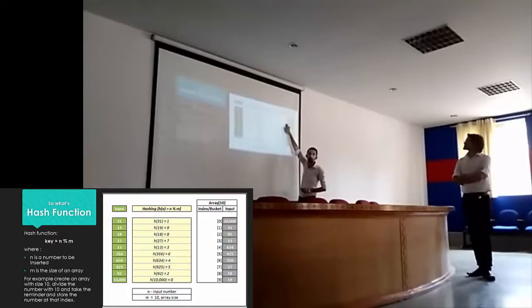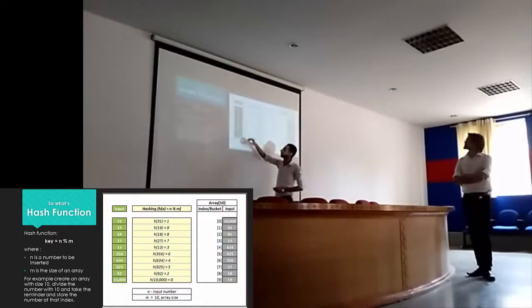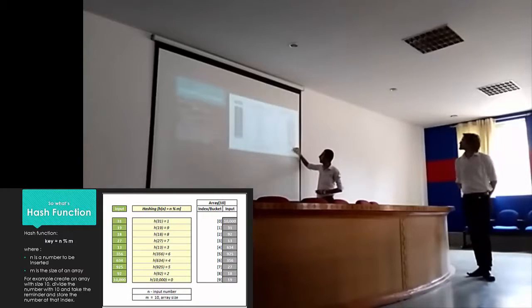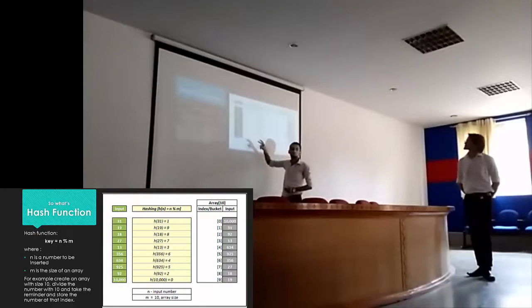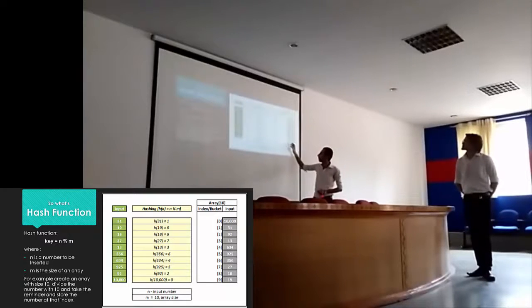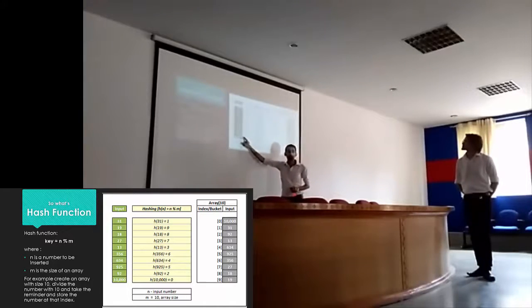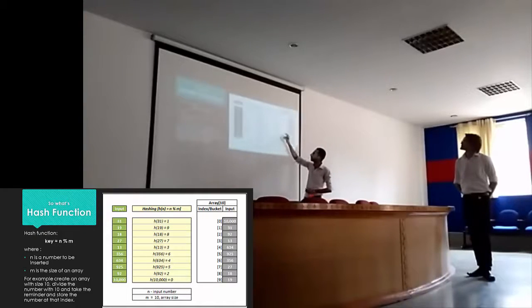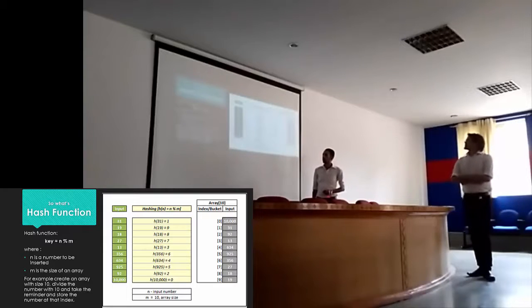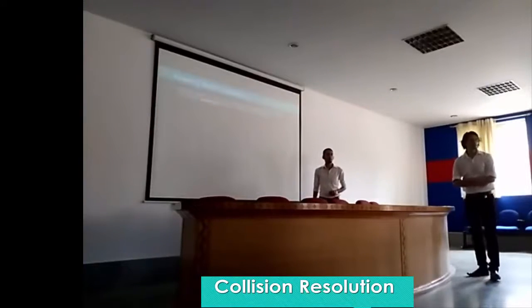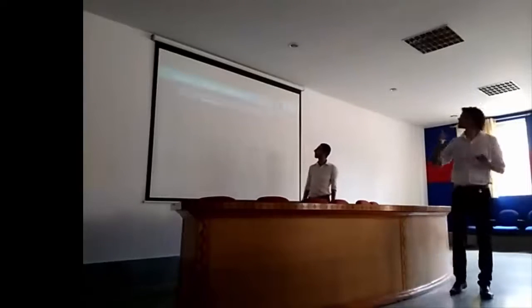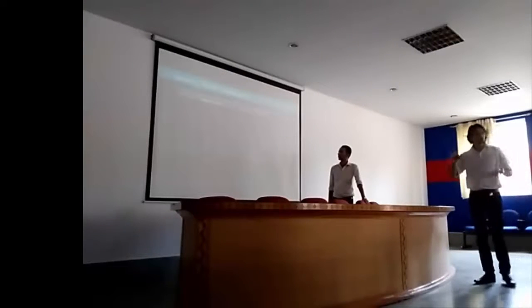You do the same process for each element. Each one is stored in a unique place with no two elements at the same location. However, what will happen if two elements are stored in the same place? This is called a collision. A collision occurs when two elements have the same remainder after applying the hash function. In this case, we need to find a way to store the information that maps to the same location. For example, 13, 33, and 53 all have the same remainder of 3 — that is a collision.